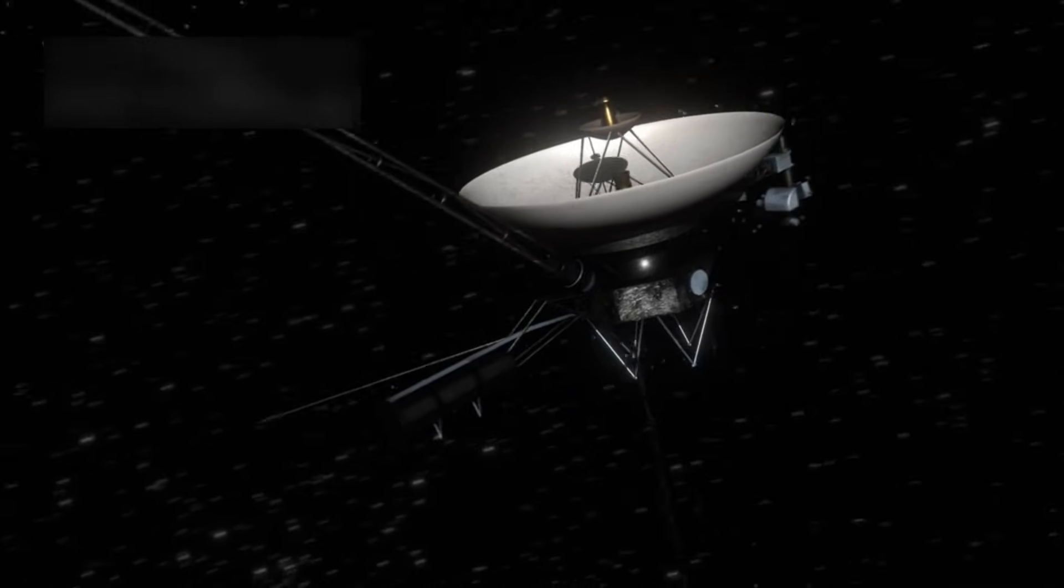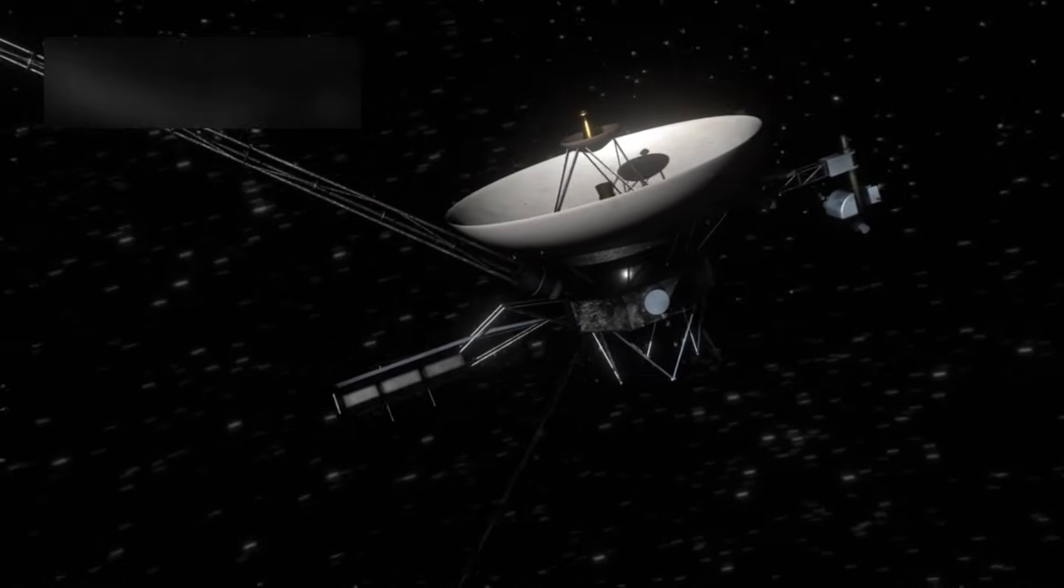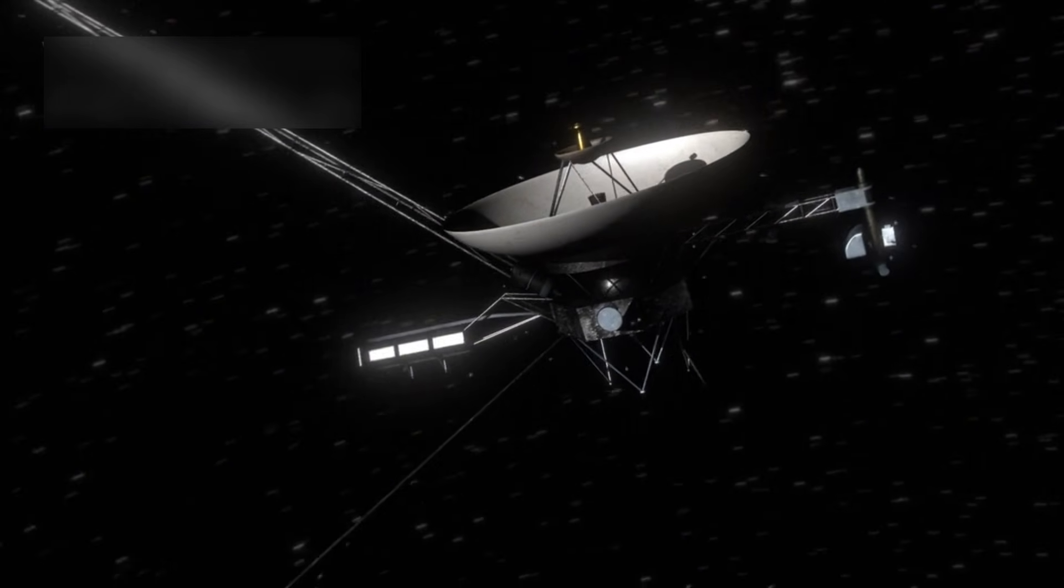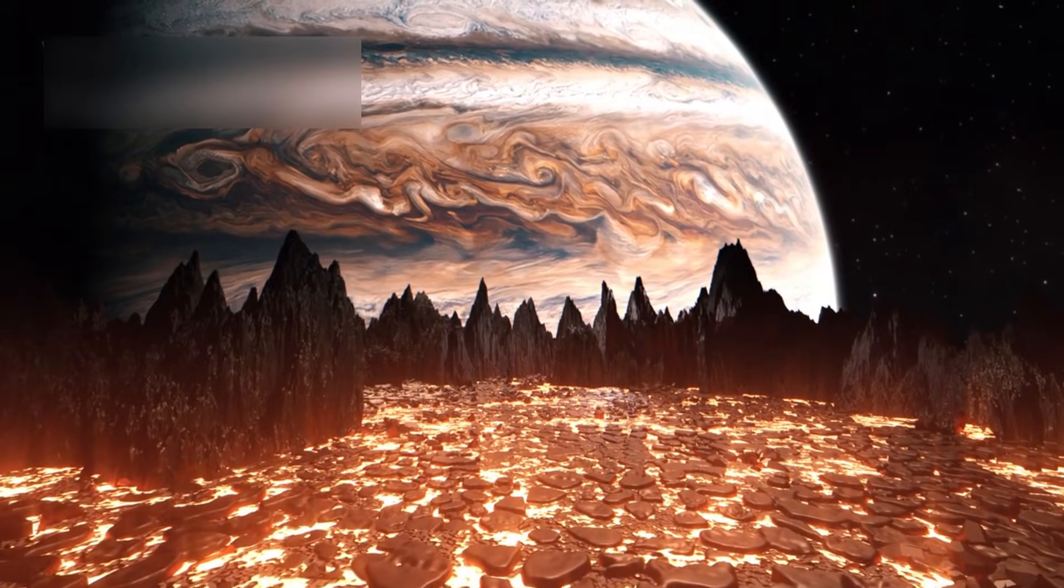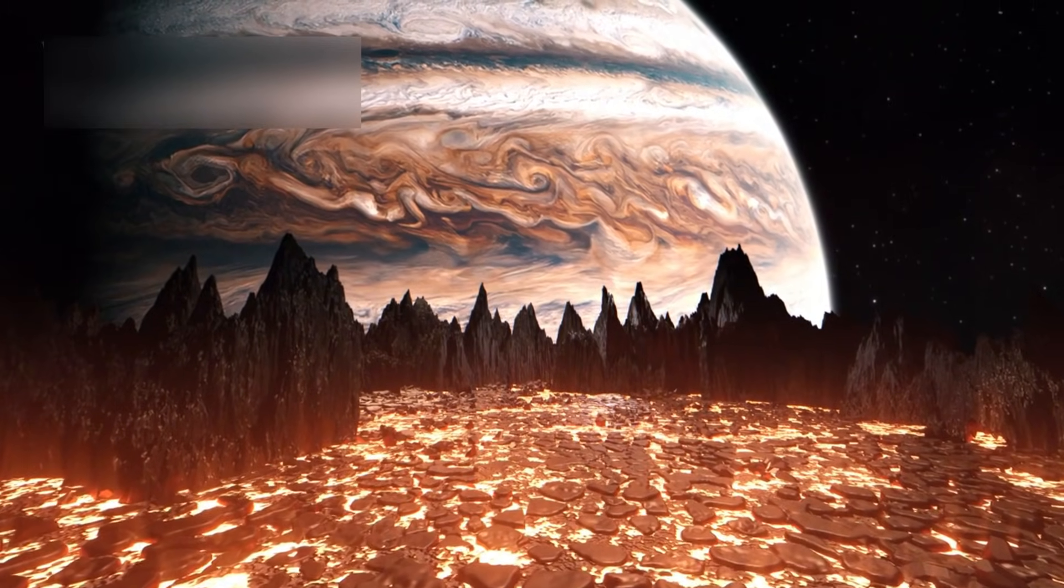Its close-up images of Jupiter's storms and Saturn's rings transformed how we see the outer solar system. It even discovered volcanic activity on Jupiter's moon Io, which was the first time active volcanoes were seen beyond Earth.